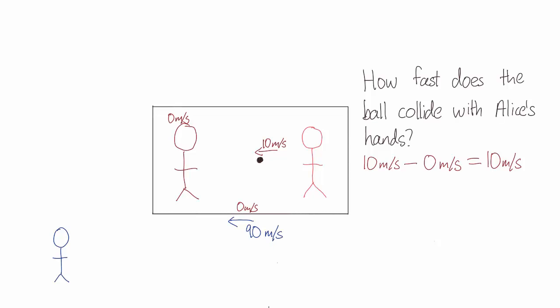So in Bob's coordinates, how fast does Bob see the ball moving? And how fast does Bob see Alice moving?